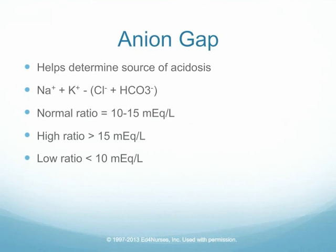A metabolic acidosis can come from a variety of factors: shock, diabetic ketoacidosis, poisonings, or different drugs. Many critically ill patients have multiple things going on, so we may need to differentiate between causes of metabolic acidosis. That's where we look at an anion gap. The anion gap looks at positive ions — sodium and potassium — relative to the primary negative ions, which are chloride and bicarb. By examining the ratio between these, we can determine whether there's a normal, high, or low ratio, which helps identify the source of the metabolic acidosis.